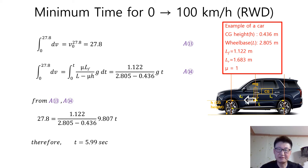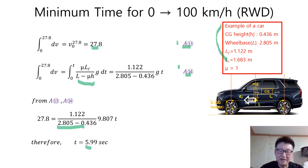The resultant value of equation a13 is 27.8 m per second. Putting the vehicle data in the red box into the equation, we have equation a14. From a13 and a14, we can calculate the velocity equation, and we finally end up with 5.99 seconds as the minimum time for acceleration from 0 to 100 km per hour in the case of rear-wheel drive.